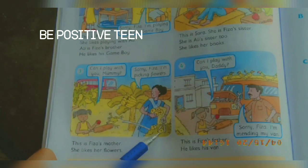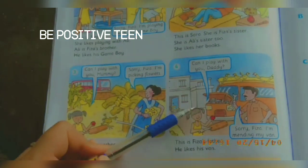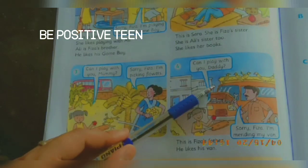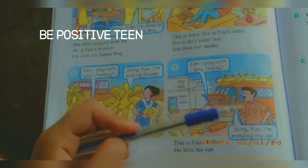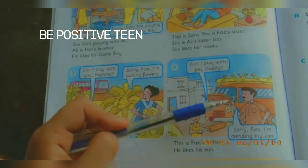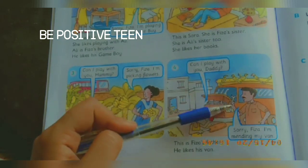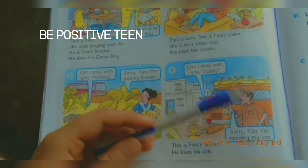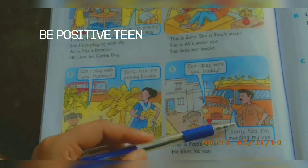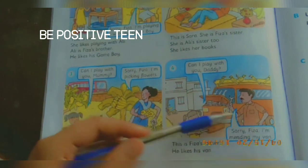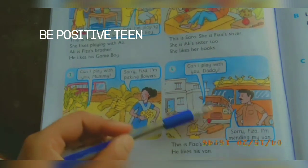In picture number four, you can see a garage and a van. There is a man — he is Fizza's daddy. He is holding a mending tool, a tool used to mend cars. Fizza asks: Can I play with you, Daddy? Daddy replies: Sorry Fizza, I'm mending my van. That is why he cannot play with Fizza.